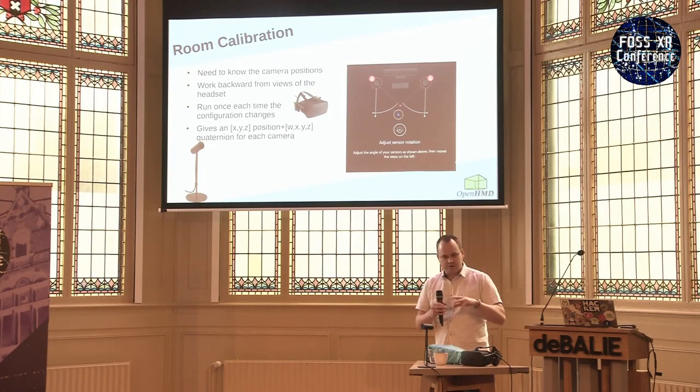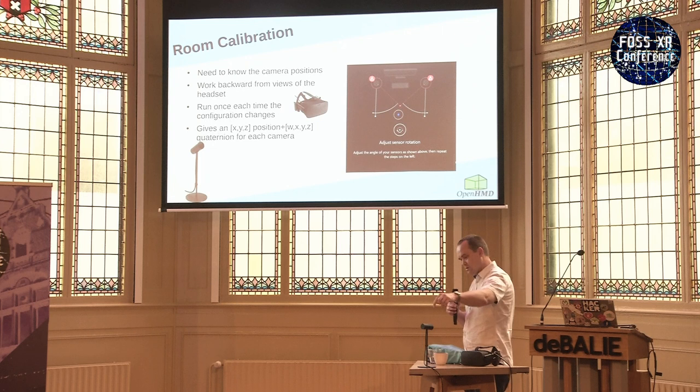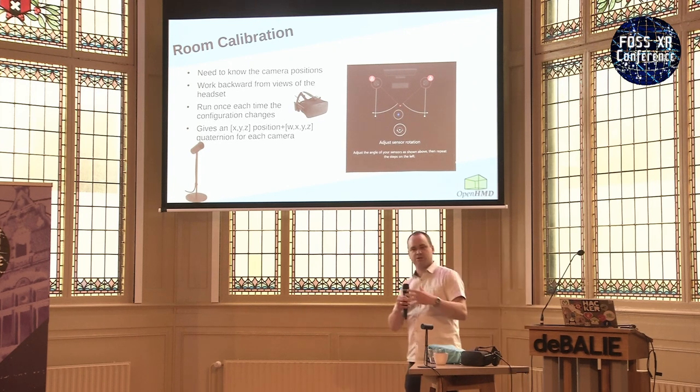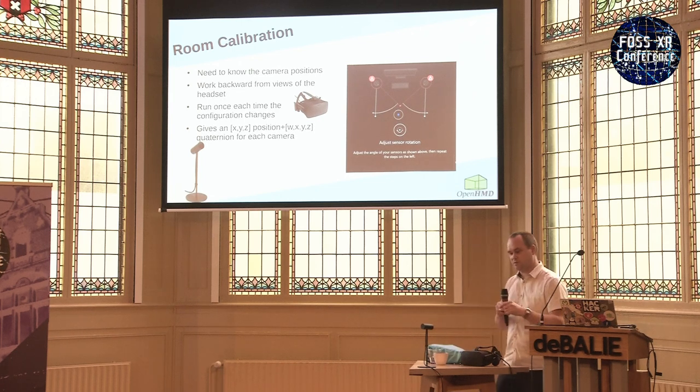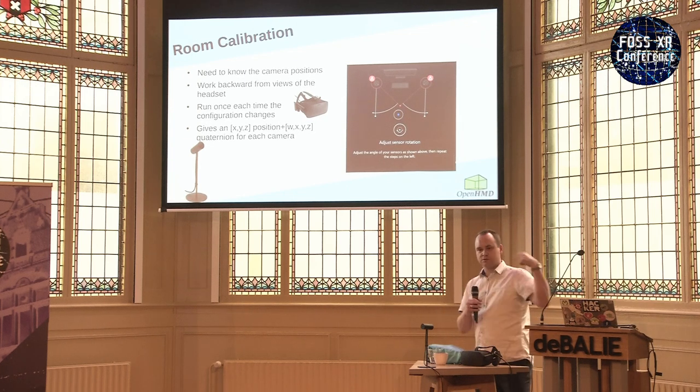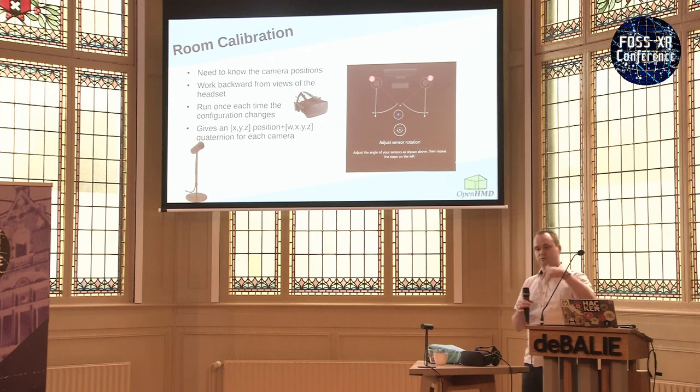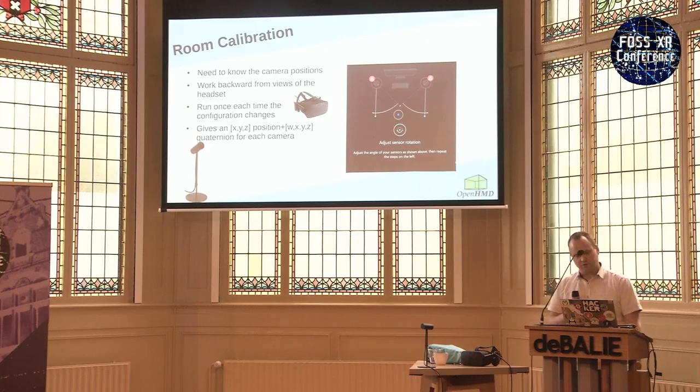Another important piece of the tracking is calibration. In order to work from a picture of something moving around back to a 3D position, you need a calibration step so the software can calculate where the cameras are and use that information to place you physically into a 3D position in virtual space. When you run your Rift you go through a setup procedure where you hold the headset or controller up in front of the cameras to establish a baseline. The software works backwards to calculate camera positions, and if you change that you have to rerun the calibration.